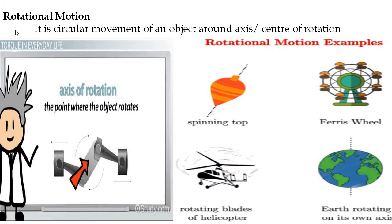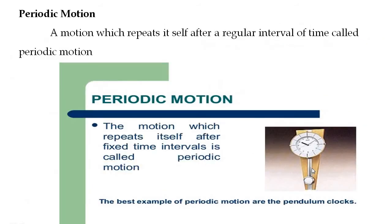Fourth, rotational motion: it is the circular movement of an object around an axis or center of rotation. The axis of rotation is the point from which the object rotates. Examples include a spinning top, Ferris wheel, rotating blades of a helicopter, and the Earth rotating on its own axis.